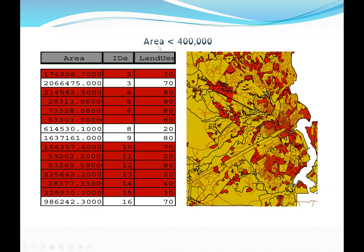In our previous example, we wrote a query to select an area that is less than 400,000. We can see in our dataset that the red areas are all the areas that meet the condition — and they are shown on the map as the red areas.